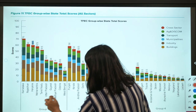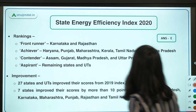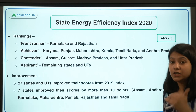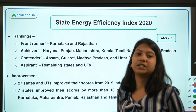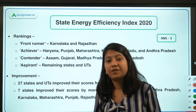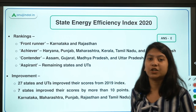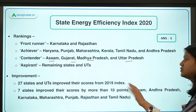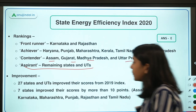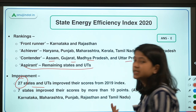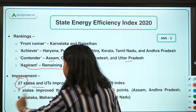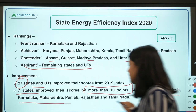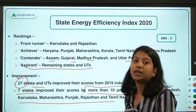In the Achiever category, we have Haryana, Punjab, Maharashtra, Kerala, Tamil Nadu, and Andhra Pradesh. In the Contender category: Assam, Gujarat, Madhya Pradesh, and Uttar Pradesh. The remaining states and union territories fall under Aspirant. A total of 27 states and union territories showed improvement, and seven of these improved by more than 10 points: Assam, Andhra Pradesh, Karnataka, Maharashtra, Punjab, Rajasthan, and Tamil Nadu.